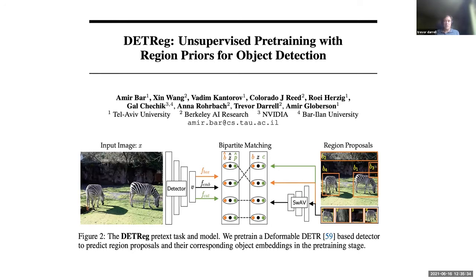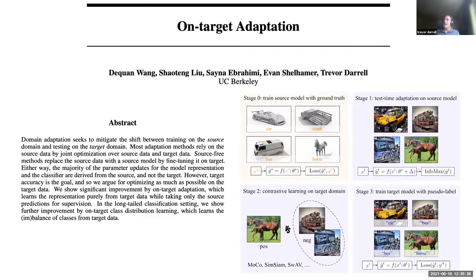Surprisingly, for anyone who was in the field 20 or 30 years ago, that concept might be familiar. Last but not least, we have our work on on-target adaptation, expanding the paradigm of test-time adaptation on a source model together with contrastive learning on the target domain, and finally training the target model with pseudo-labels — the best of all these worlds — to get state-of-the-art performance. I'll now hand it off to Colorado.